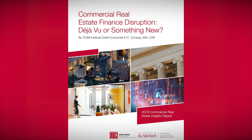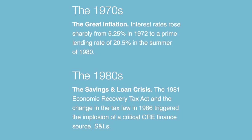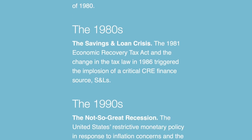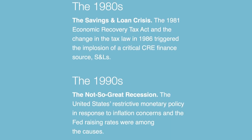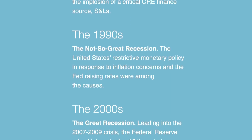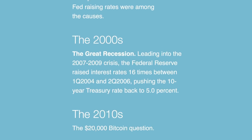This paper takes us back to the 1950s and looks all the way forward to what were the major primary disrupting forces in the economy and real estate finance. All of the forces we've identified post-World War II are present today, and every single one of them are elevated.